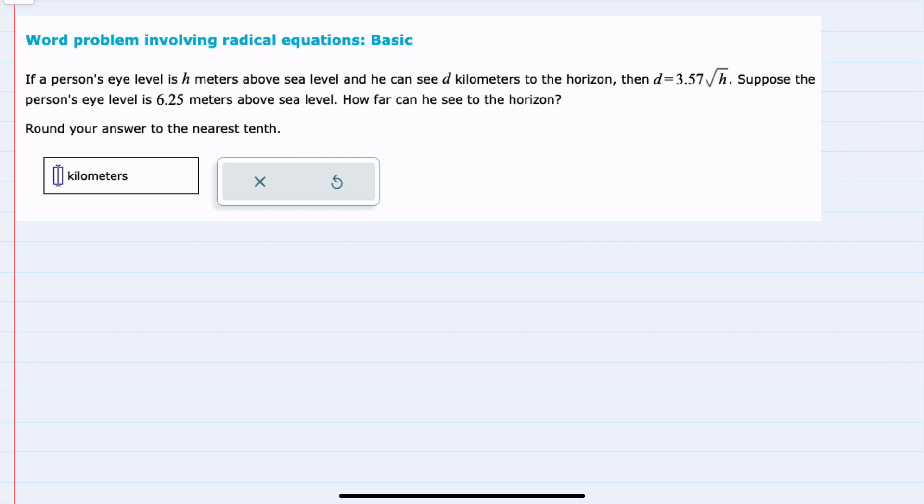We're told that if a person's eye level is h meters above sea level, the distance they can see to the horizon is d kilometers. So we have different units here—h in meters, d in kilometers—but we're given the formula with those units.